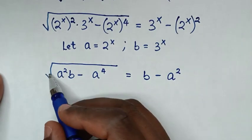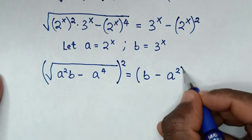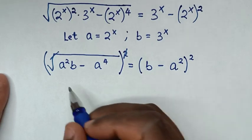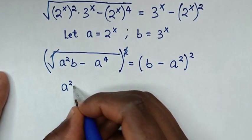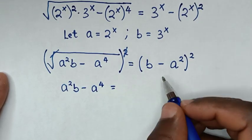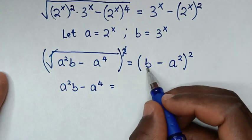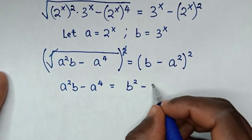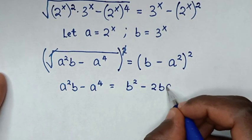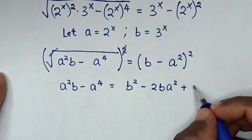In the next step, to remove the square root we square both sides. The square root cancels, giving a²b minus a⁴ on the left. The right side becomes (b minus a²)² which expands to b² minus 2a²b plus a⁴.